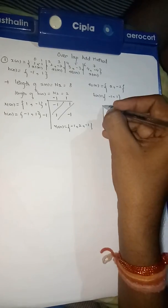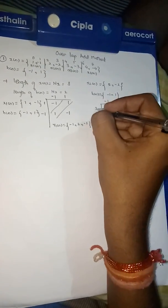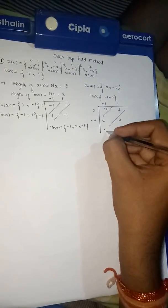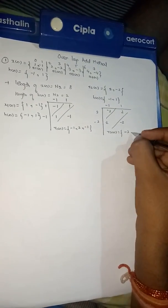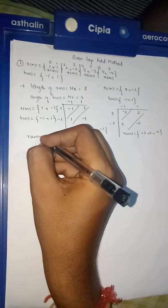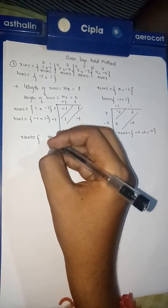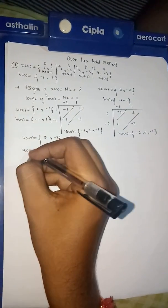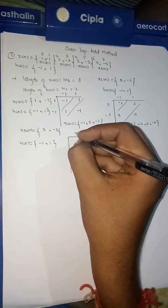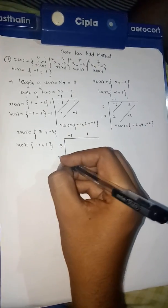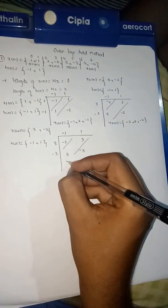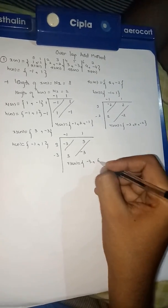For x2[n] = {-1, 1}, using the matrix method we get y2[n] = {-2, 4, -2} (wait: minus 2, 2, 2, minus 2). For x3[n] = {3, -3} and h[n] = {-1, 1}, the matrix method gives -3, 3, 3, -3, so y3[n] = {-3, 6, -3}.